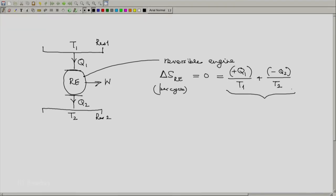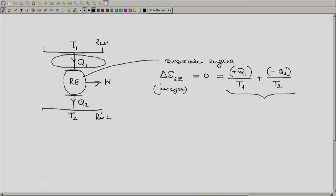Now let us look at it from the point of view of the reservoir. Even this heat transfer, the process of this transfer of heat q1 from the reservoir to our reversible engine, is a reversible process. So it takes place at essentially 0 temperature difference. So the temperature here is also T1.